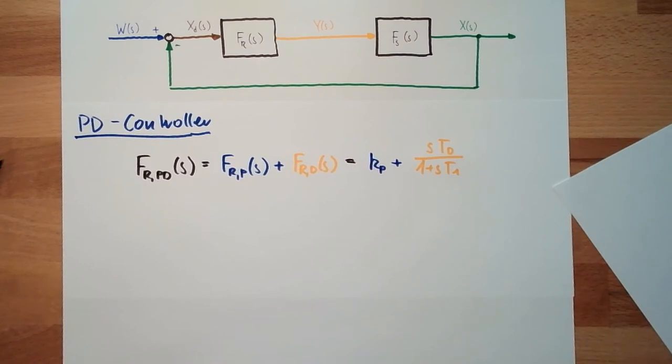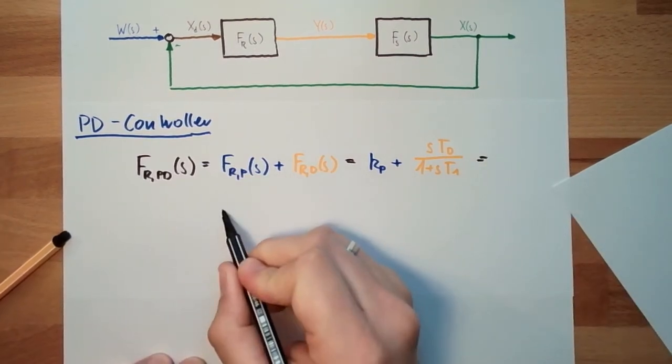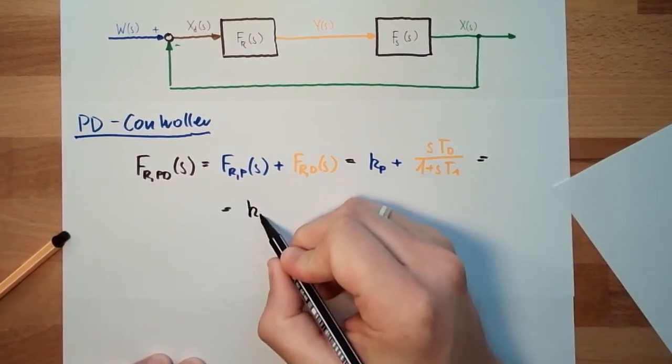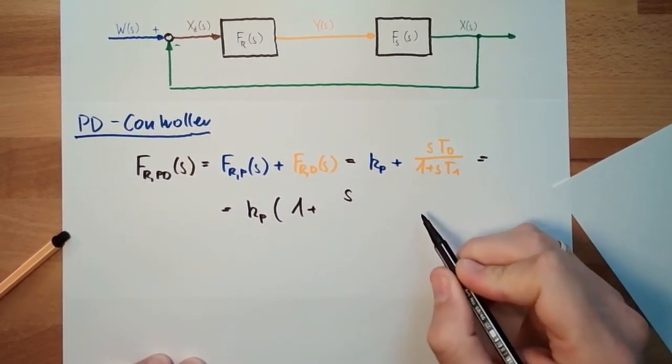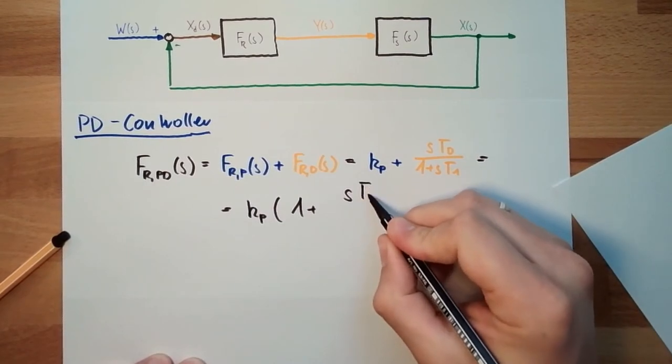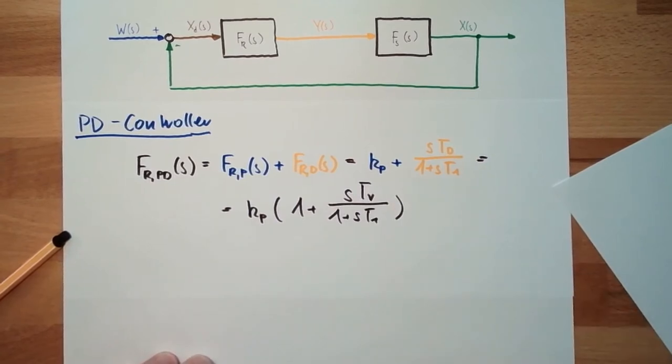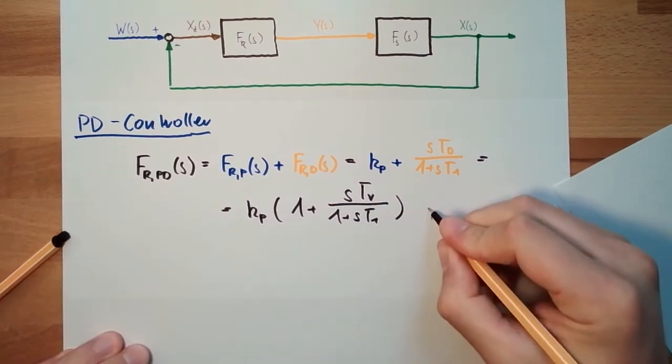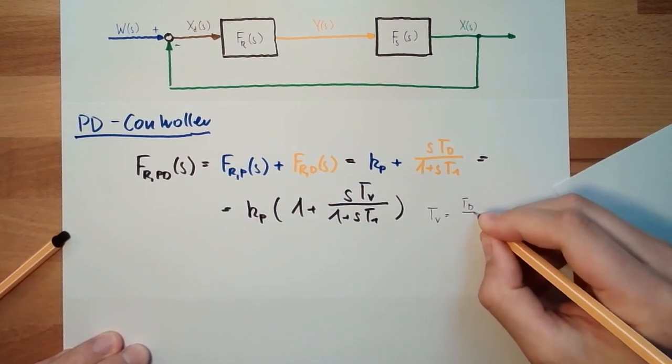Here we usually do the same trick. We're getting out this KP, so we're ending up in KP multiplied by 1 plus S, and now it's no longer TD, it's TV, 1 plus ST1. And this TV is TD divided by KP.